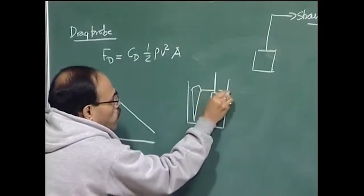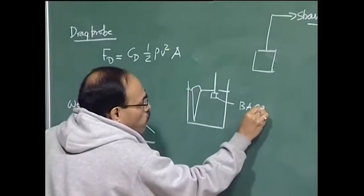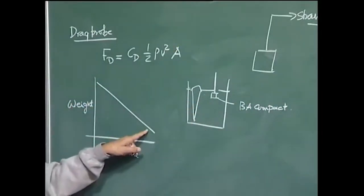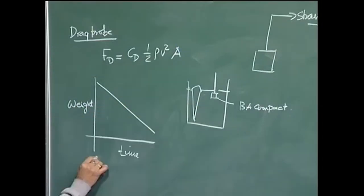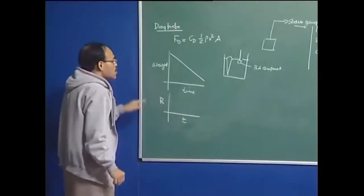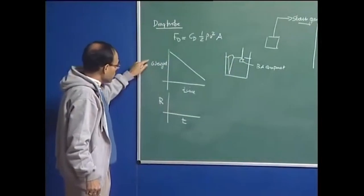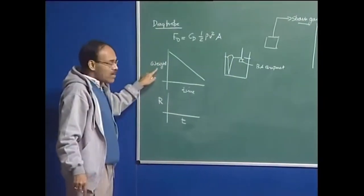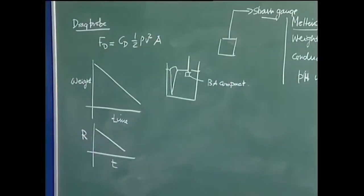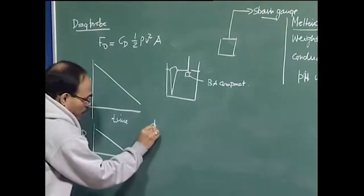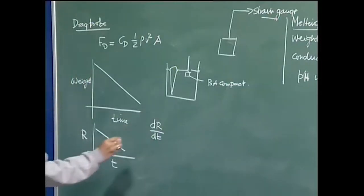If the compact is cylindrical, I can convert this weight into a corresponding radius because I know the density and the volume is correlated with both the length and the radius. So the weight can be converted in terms of a radius, and I can plot radius versus time. Once I know r versus t, I can calculate dr/dt — the rate of change of radius — which is actually proportional to the mass transport coefficient, as one can very conveniently show.